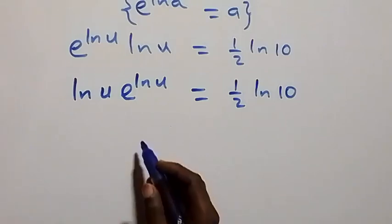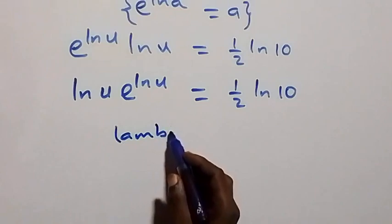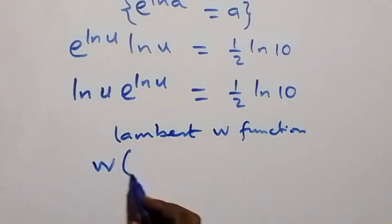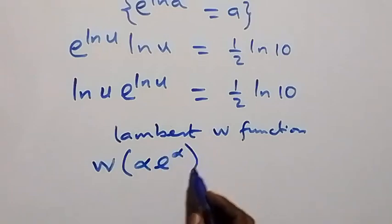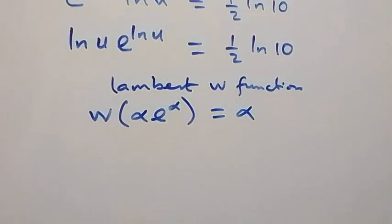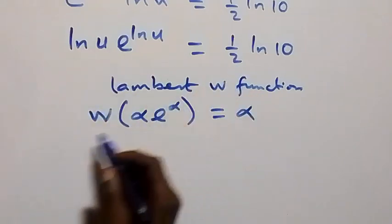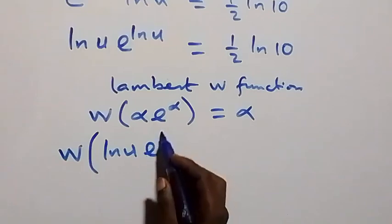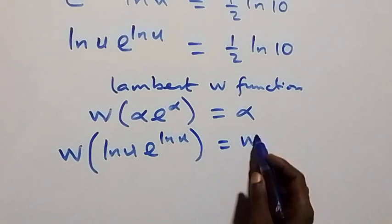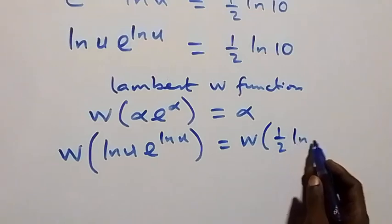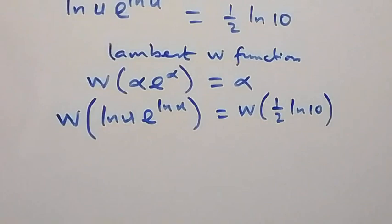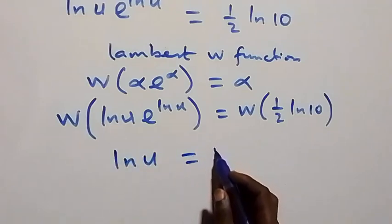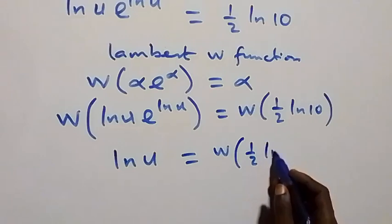From the Lambert W function: W(α·e^α) = α. We can take the W function on both sides, giving W(ln u · e^(ln u)) equals W(half ln 10). Following the identity, this simplifies to ln u equals W(half ln 10).